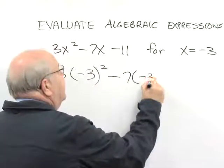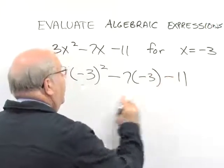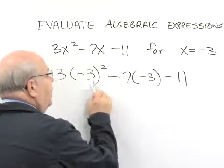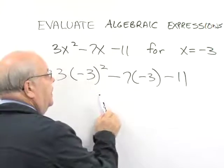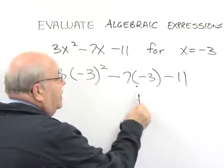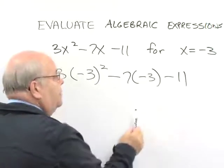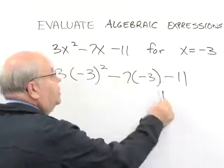So, let's see if we have done this carefully. 3 times (-3)², and we have a parentheses around the -3, minus 7 times (-3), there's a parentheses around the -3, and then just subtract 11.